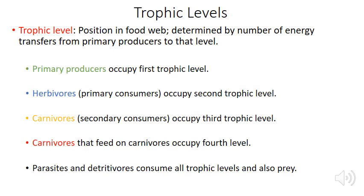Trophic levels are a simplification of food webs that lumps functionally similar organisms together. Position in the trophic system is determined by the number of energy transfers from primary producers to that level. The first trophic level are primary producers — plants, algae, and phytoplankton. The second are herbivores or primary consumers, then carnivores or secondary consumers, and potentially one or two more levels above that. Parasites and detritivores consume material at all trophic levels.